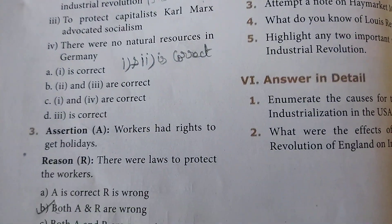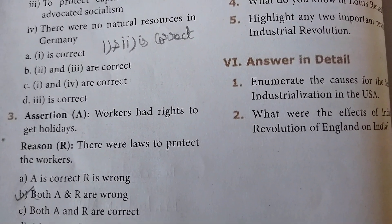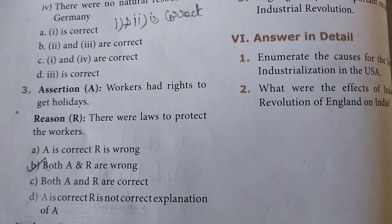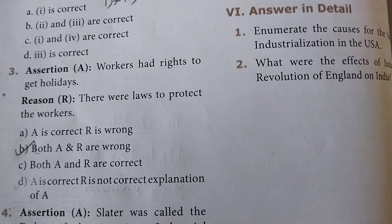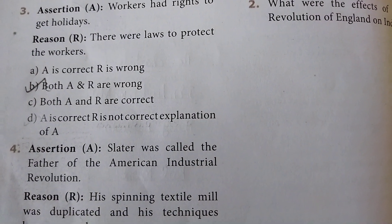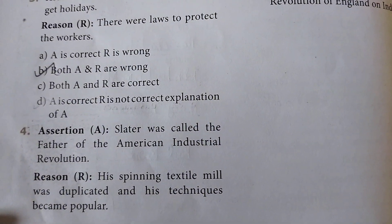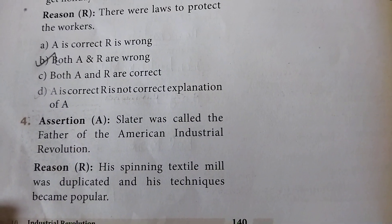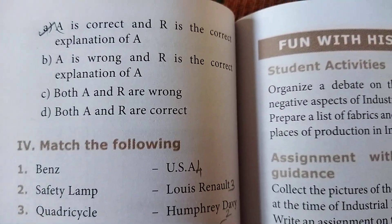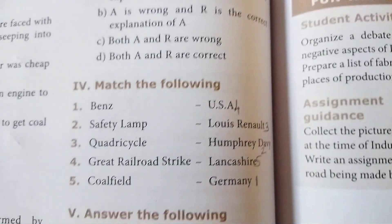Third question — Assertion and Reason: Assertion: workers had rights to get holidays. Reason: there were laws to protect the workers. Answer is B — both A and R are wrong. Fourth one — Assertion: Slater was called the father of the American industrial revolution. Reason: his spinning textile mill was duplicated and his techniques became popular. Answer is A — A is correct and R is the correct explanation of A.